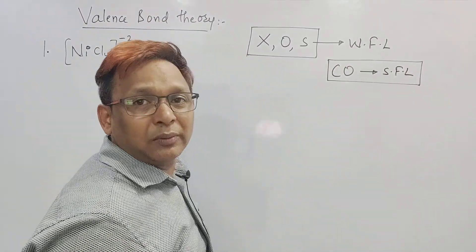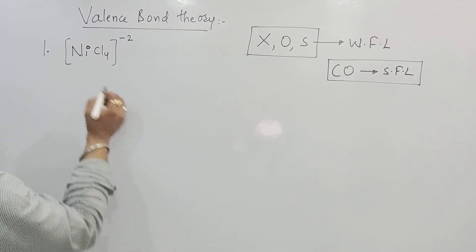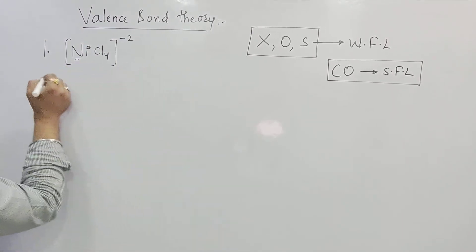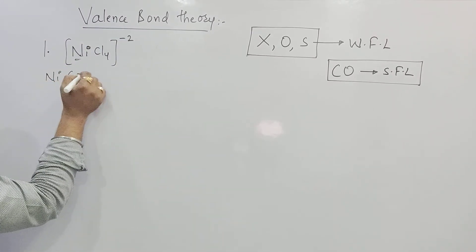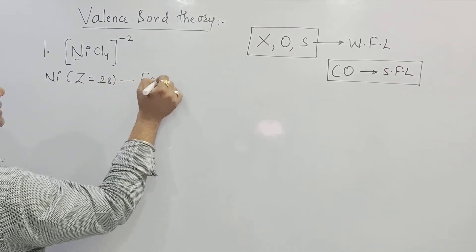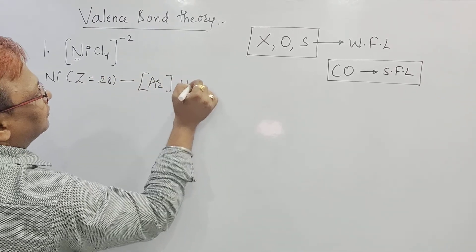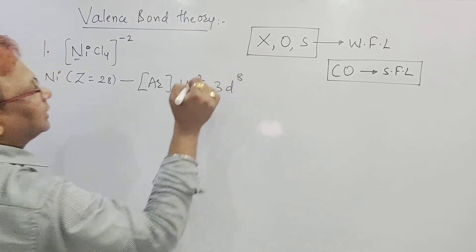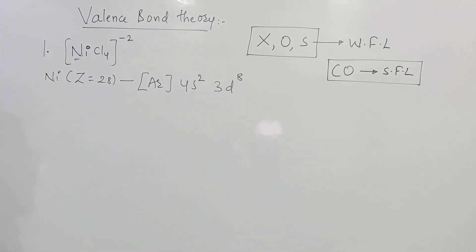Now see here, in this Ni, Ni's atomic number is equal to 28. That means configuration should be written as Argon 18, 18 plus 2 is 20, plus 8 is 28. This is the configuration we are writing for Ni.